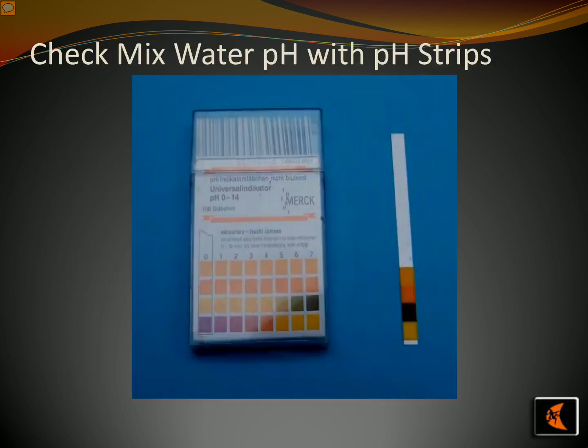Constantly monitoring the water pH levels during the mining process is essential to ensure optimal mixing of bentonite. pH strips are an effective and speedy way to detect changes in the water's acidic or alkaline levels. Monitoring the pH levels is consequently of paramount importance for a successful bentonite mix.